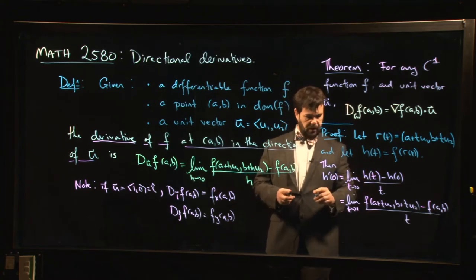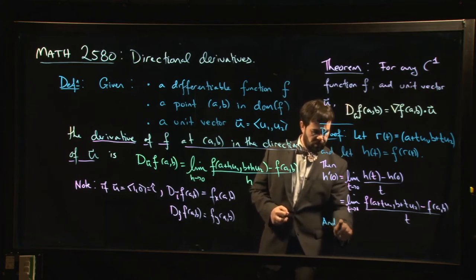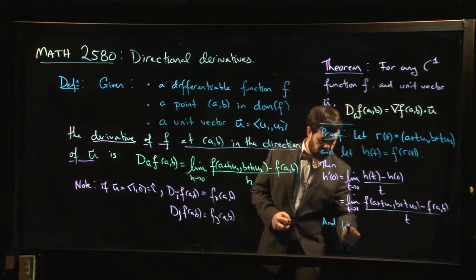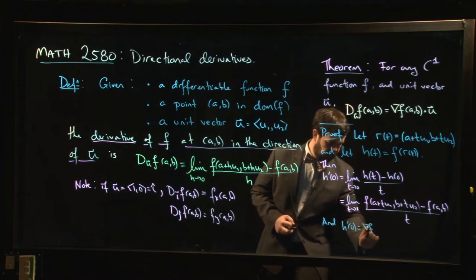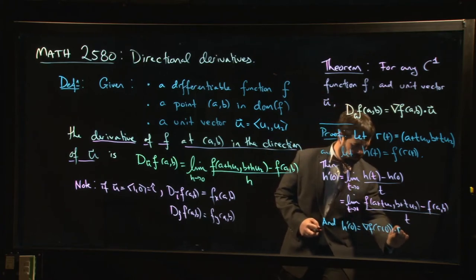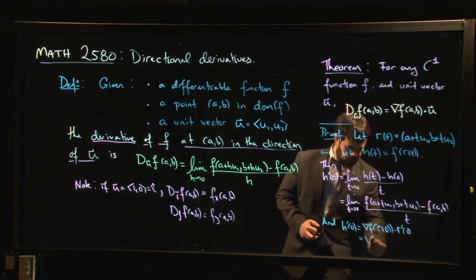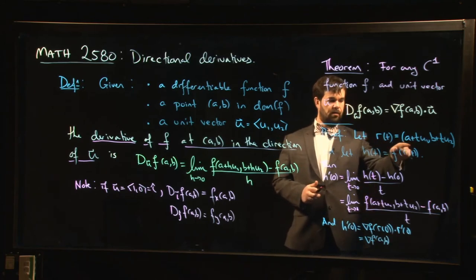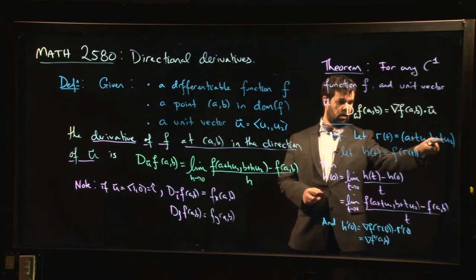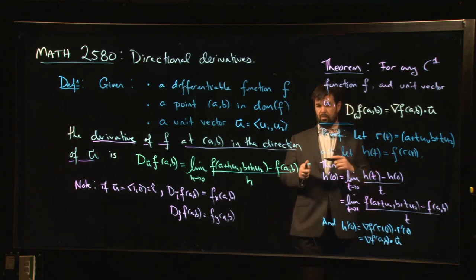So on the other hand, there's another way that I can compute this. If I use the chain rule, I know that h'(0) is the gradient of f at r(0) dot product with r'(0). But r(0) is just the point (a, b), and what's r'(0)? Well, r'(t) for any t is just (u1, u2), so r'(0) is the vector u. And that gives you the formula.